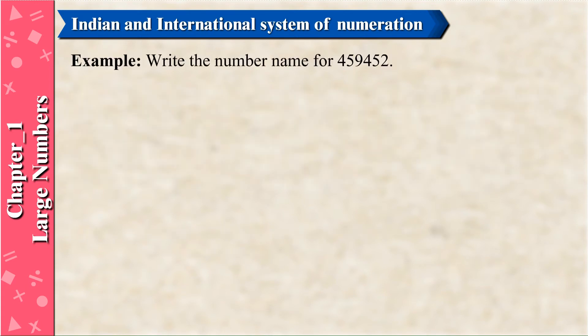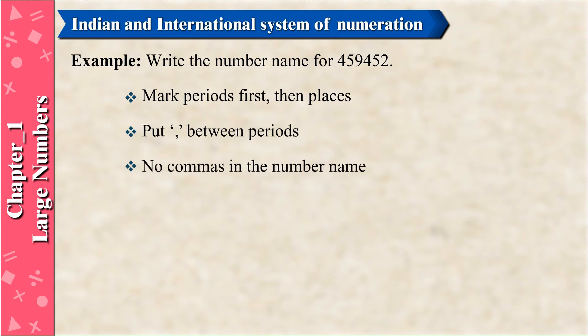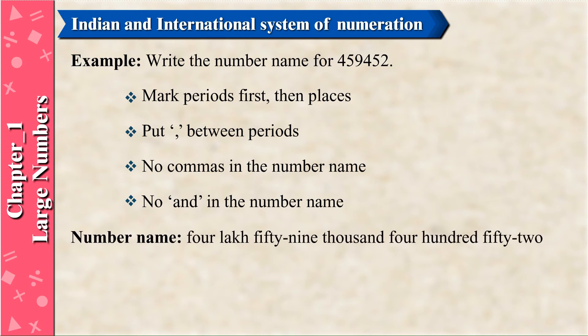Example: Write the number name for 459452. Mark periods first, then places. Put a comma between periods. There is no 'and' in the number name, and no commas in the number name itself. Number name: 459452.